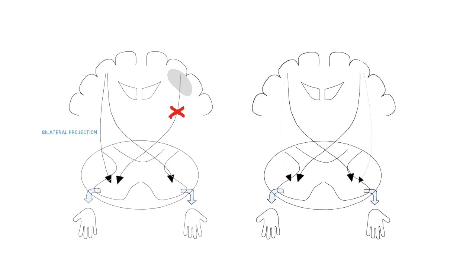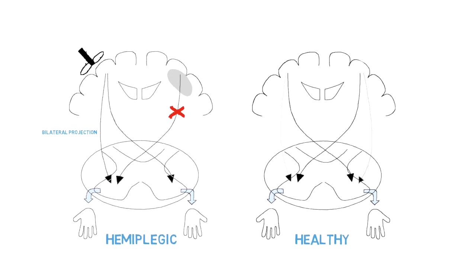This was studied systematically by using transcranial magnetic stimulation in healthy and in hemiplegic children. This is the first mechanism underlying mirror movements.